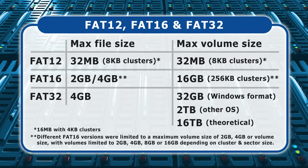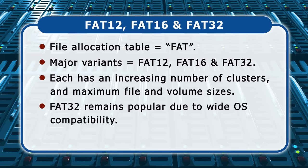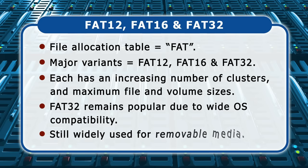FAT12 supported a maximum file and volume size of 32 megabytes. Meanwhile, FAT32 can store individual files up to 4 gigabytes in size and is limited to 32 gigabyte volumes if formatted in Windows, up to 2 terabyte volumes when formatted with other operating systems, and has an absolute maximum volume size of 16 terabytes. FAT32 remains a popular file system due to its high level of compatibility across operating systems and is still widely used to format USB flash drives, memory cards and some other external storage devices.